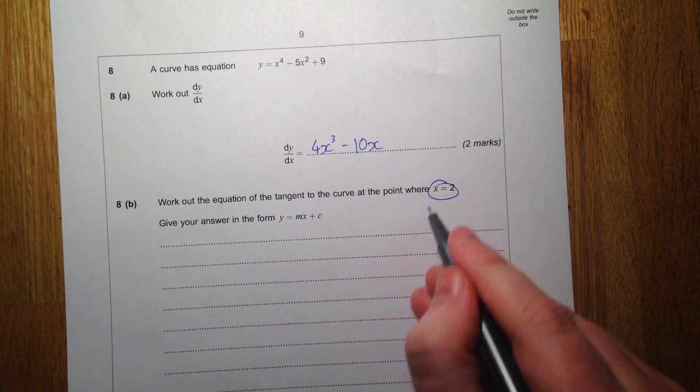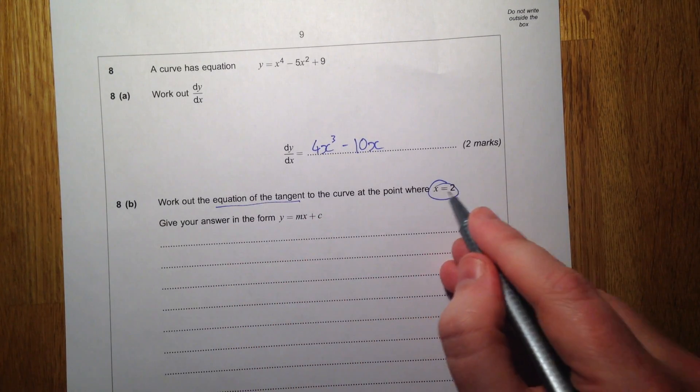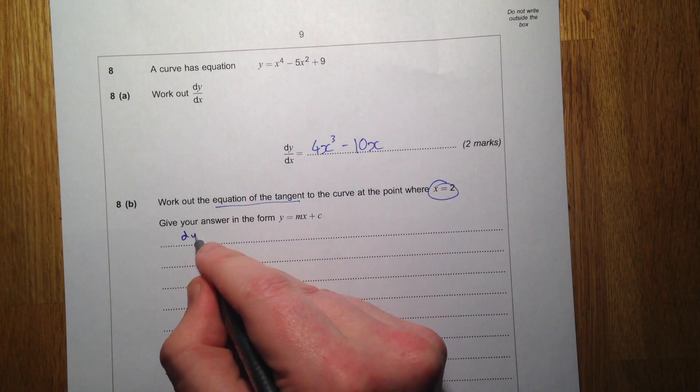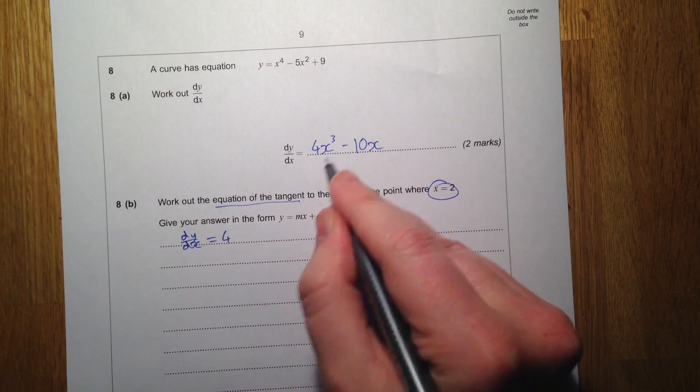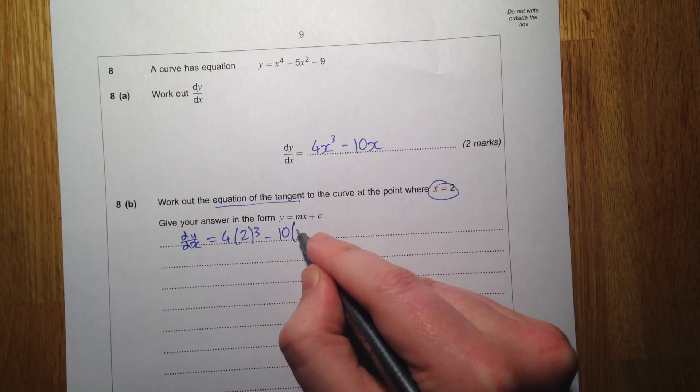We've got a value of x equals 2 and we're going to find the equation of a tangent. So we're going to bring this x equals 2 into these two equations. So dy/dx is 4 lots of x cubed, so 4 lots of 2 cubed, take away 10 lots of 2.